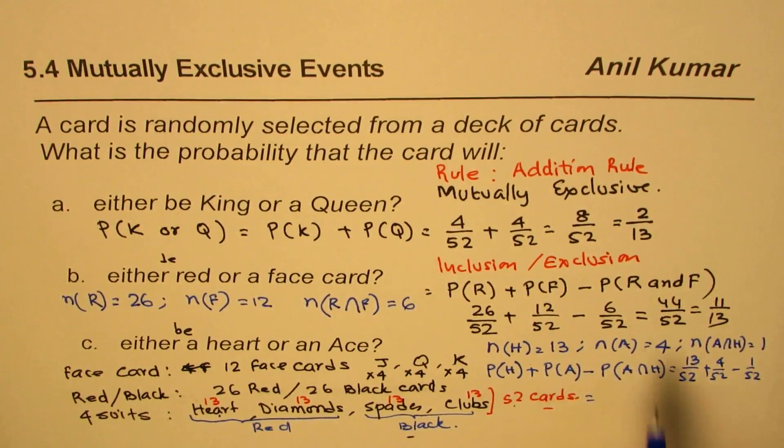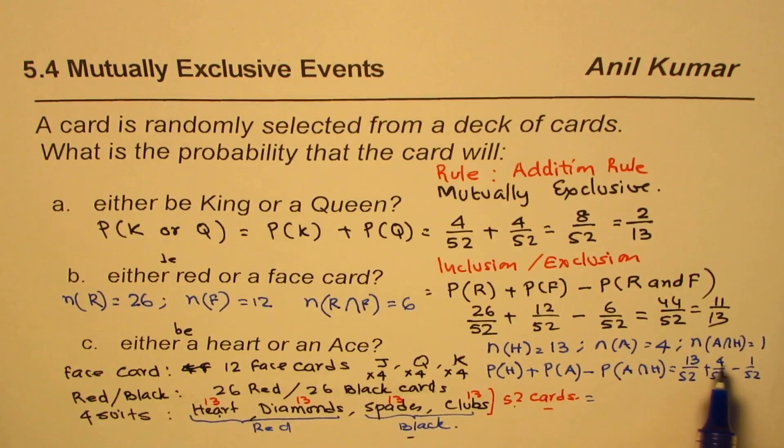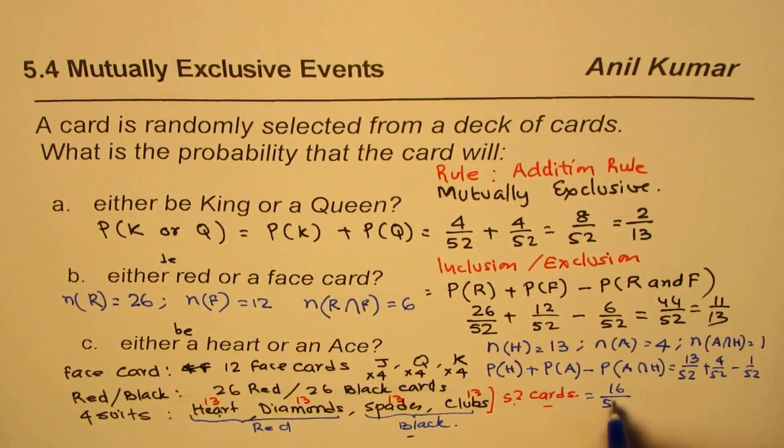Let's do the math: 13 plus 4 is 17, take away 1 is 16. So we have 16 over 52.